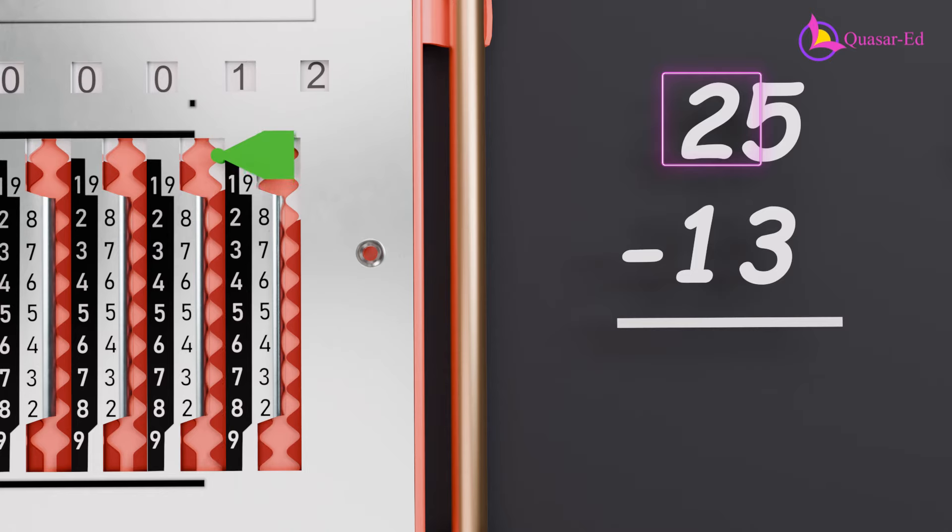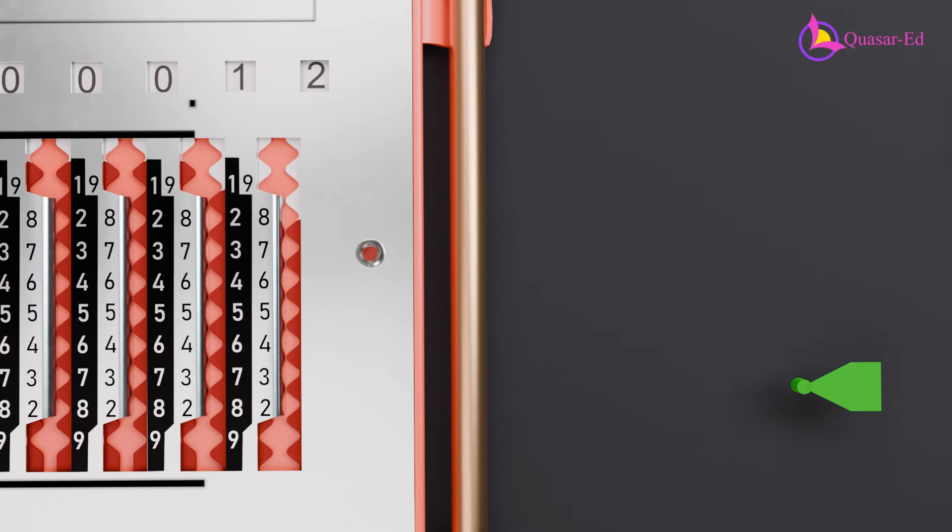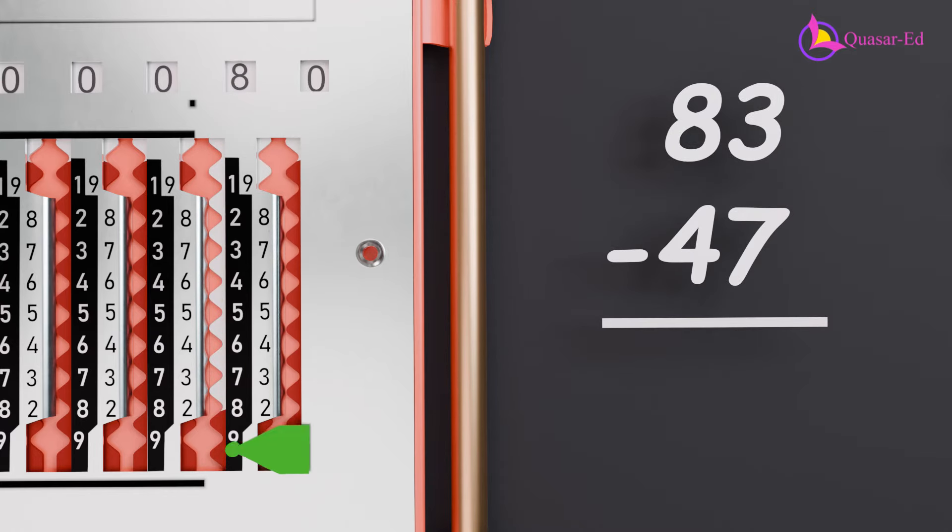So 25 minus 13 gives us 12. Now let's explore another example for clarity. Let's subtract 47 from 83. Set the sliders to 8 and 3. Start with the rightmost column, 3.